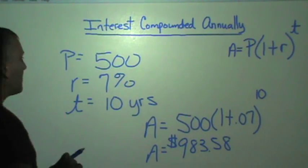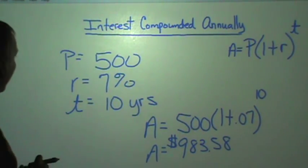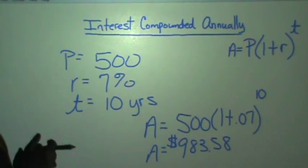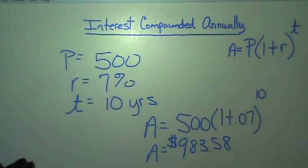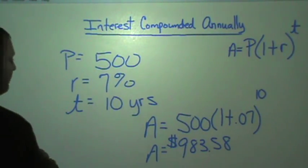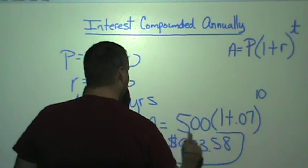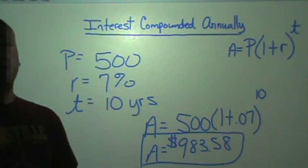So after 10 years, if you put $500 in the bank at 7% interest, you would have made $483.58. Hopefully this will help you go.